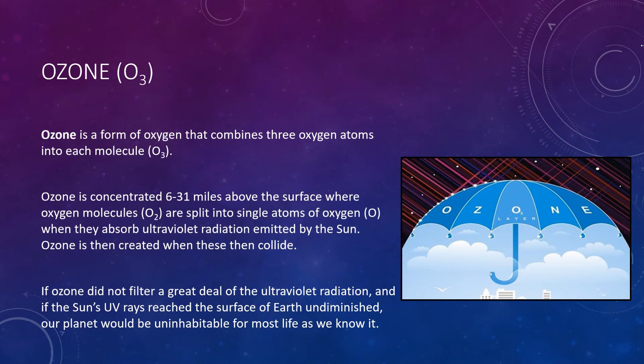Ozone is concentrated in this six to thirty-one mile height range because a crucial balance exists there. The ultraviolet radiation from the sun is sufficient to produce single atoms of oxygen, and there are enough gas molecules to bring about the required collisions. The presence of the ozone layer in our atmosphere is crucial to those of us who dwell on earth. The reason is that ozone absorbs much of the potentially harmful ultraviolet radiation from the sun. If ozone did not filter a great deal of ultraviolet radiation, and if the sun's UV rays reached the surface of the earth undiminished, our planet would be uninhabitable for most life as we know it. Thus, anything that reduces the atmosphere's naturally occurring ozone could affect the well-being of life on earth. Just such a problem exists and is described in the next image.